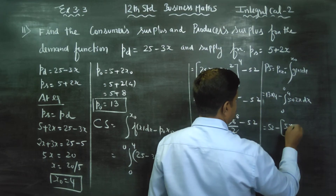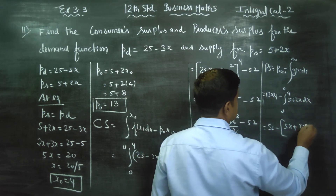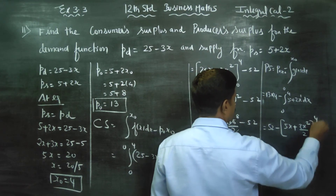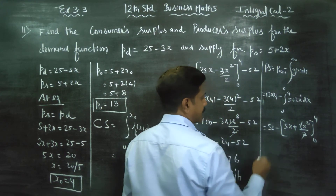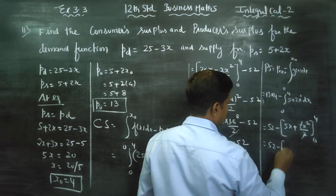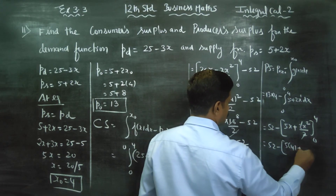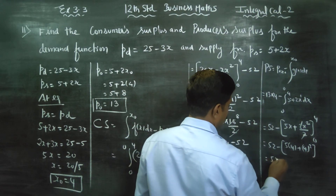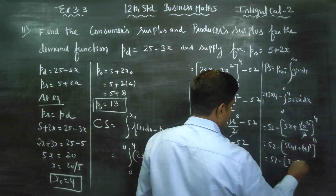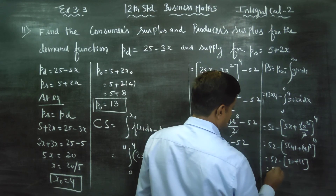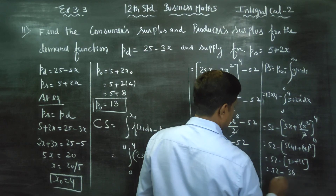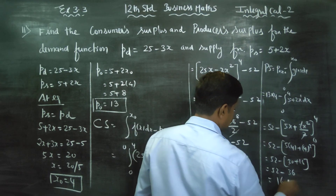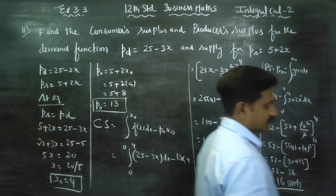Integrating 5 plus 2X gives 5X plus 2X squared by 2; the 2 cancels to give 5X plus X squared. Applying limits 0 to 4: upper limit gives 5 into 4 plus 4 squared, which is 20 plus 16 equals 36. Lower limit with 0 gives 0. So 52 minus 36 equals 16 units, which is the producer surplus.